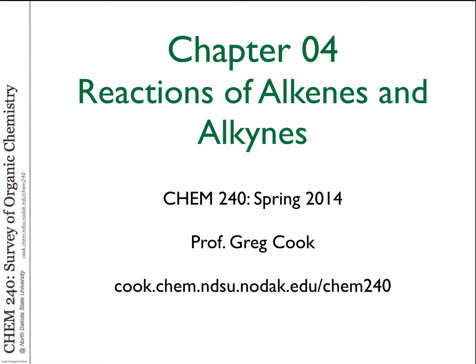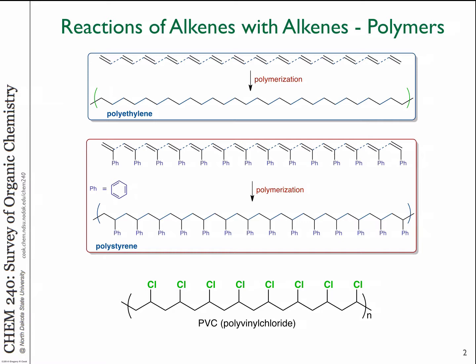Let's continue talking about reactions of alkenes and alkynes. From last time, we talked about polymerization reactions with free radical chemistry. What I expect you to be able to do is look at the structure of a polymer, identify the repeating unit, and determine what alkenes might have made that polymer, or vice versa, what the polymer structure might look like from an alkene.